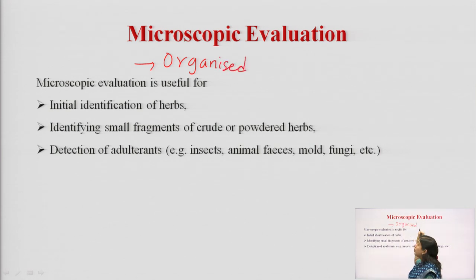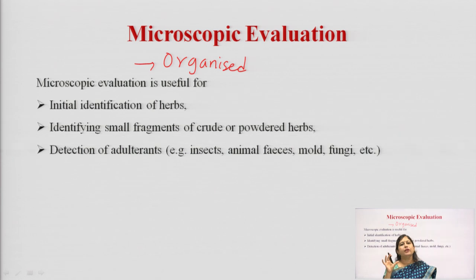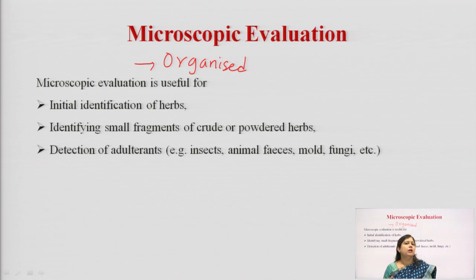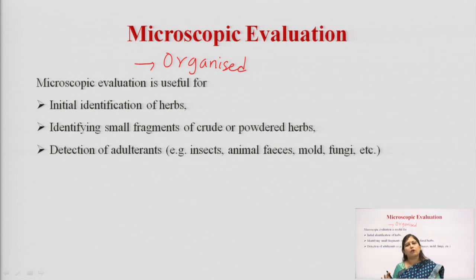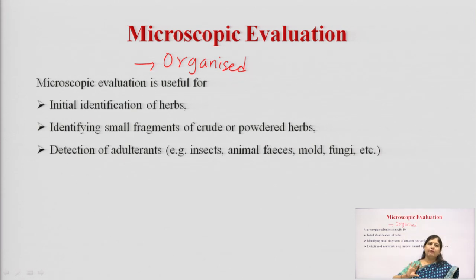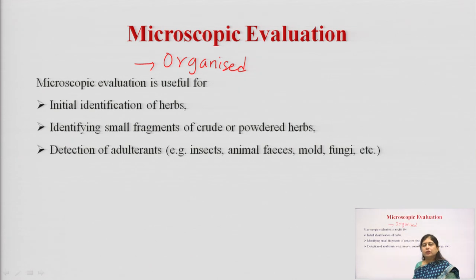Organized drugs are those drugs which have a proper cellular constitution. They are either a part of a leaf, bark, root, wood, fruit, flower, etc. They are not any kind of juice or extract — in such unorganized drugs normally we do not go for microscopical evaluation.